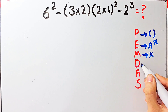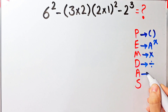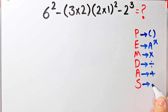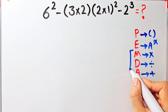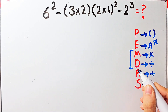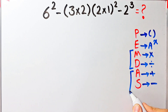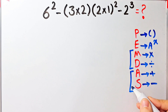D stands for division, A stands for addition, and S stands for subtraction. Multiplication and division have the same level of priority. Also, addition and subtraction have the same level of priority, and when we have both in an expression, we start from the left.